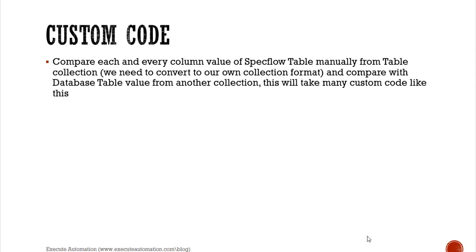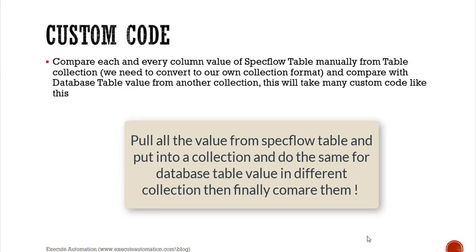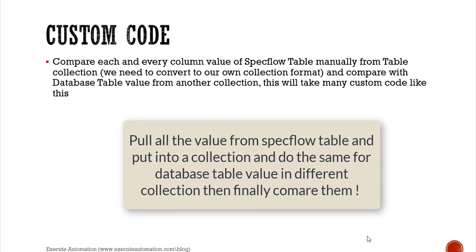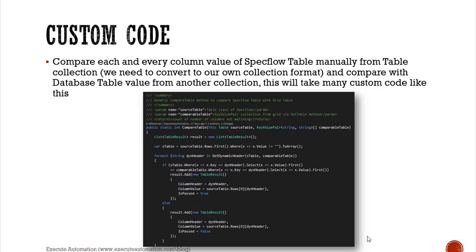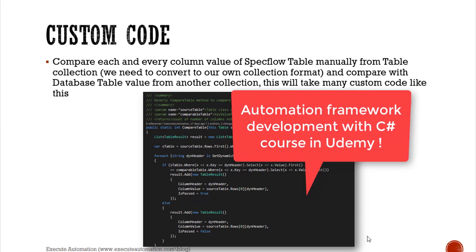So you're doing two operations here: you pull all the data from the SpecFlow table and put it into a collection - which has to be converted into your own custom format - and then you retrieve values from the database table and put them into another collection. Now you have two collections altogether, and then you need to verify values against these two collections. It requires a lot of custom code, like comparing the source table against the comparable table. This comparison code is available in our automation framework development with Selenium C# course.